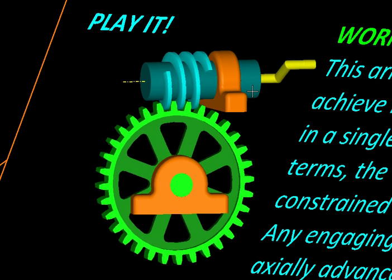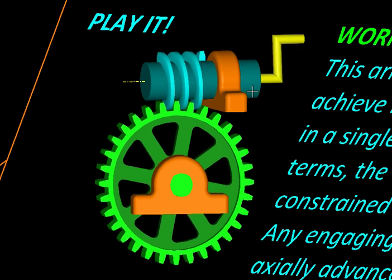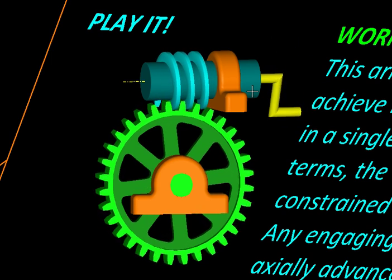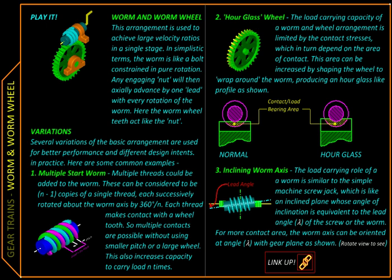The gear reduction here is 1 is to 32, which is a very large reduction not possible by using simple spur gears. Let us now look at some of the variations that are made to this arrangement in practice.